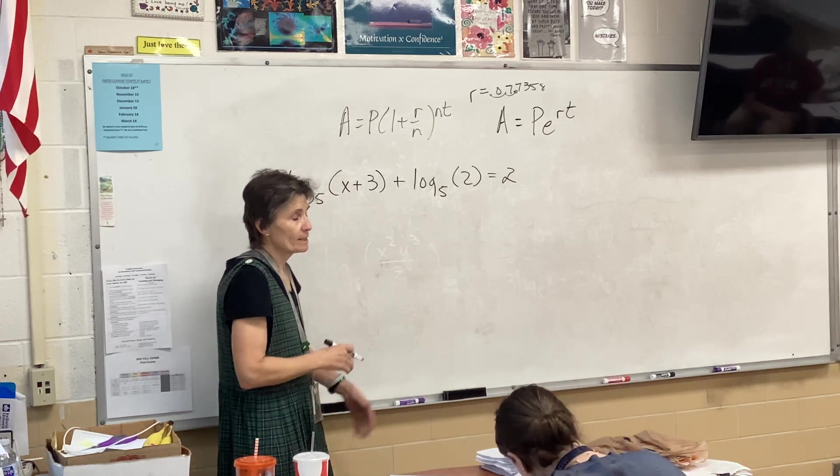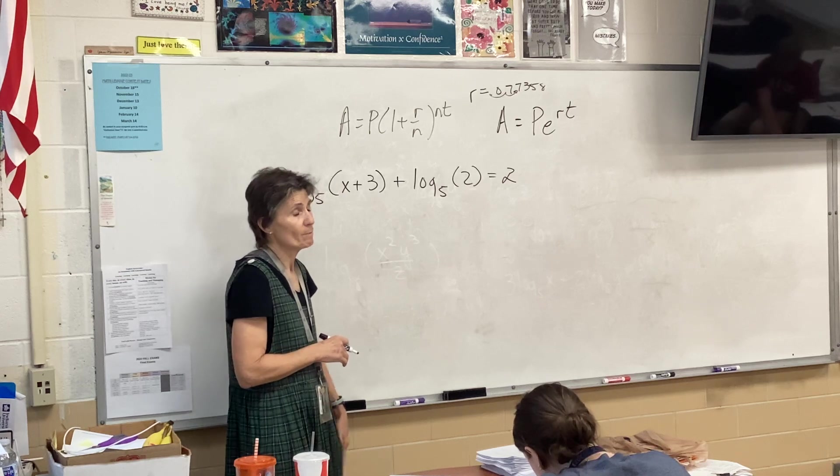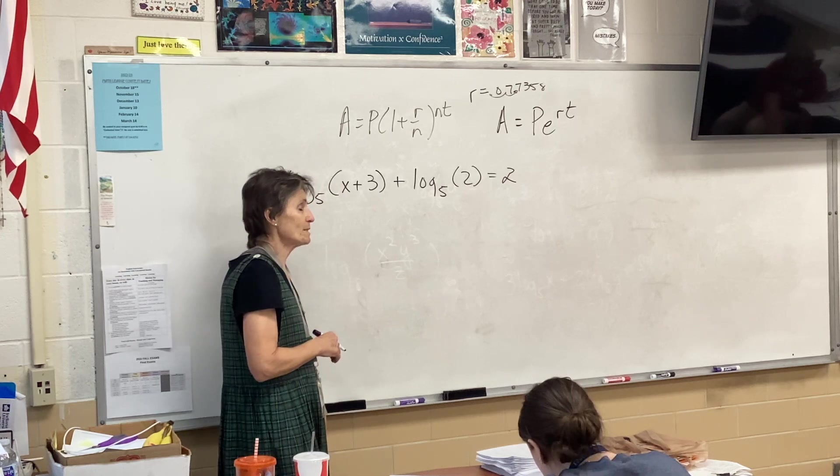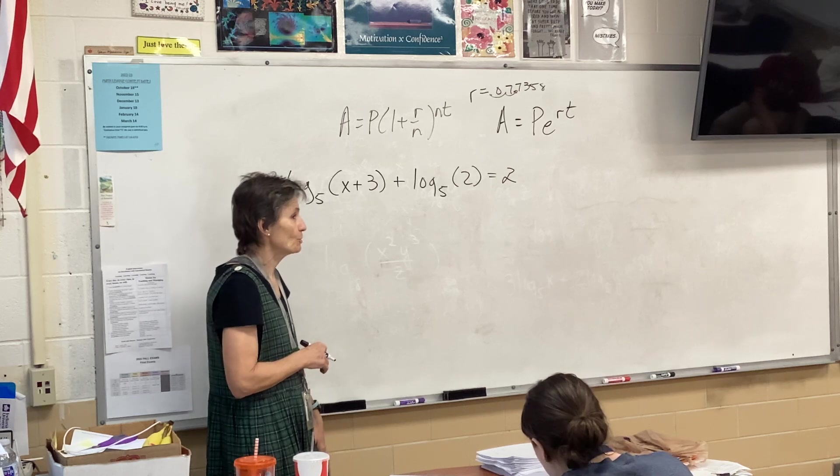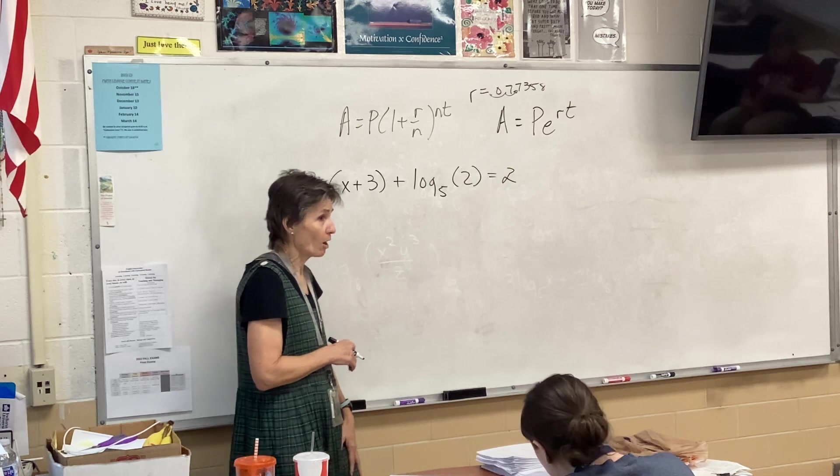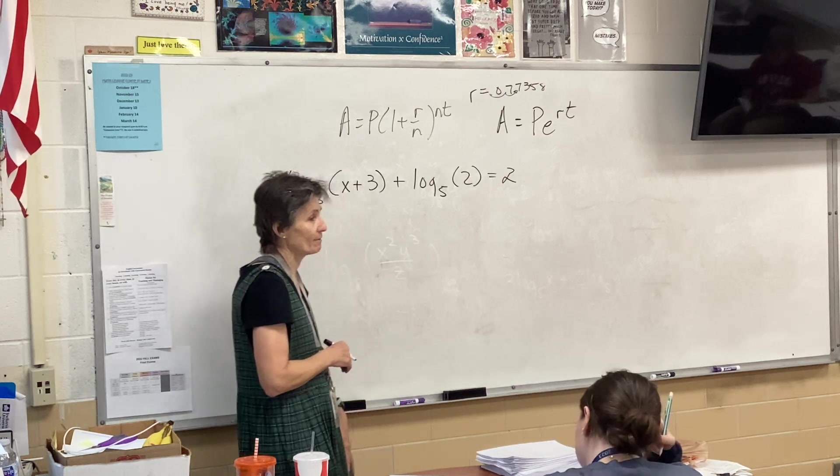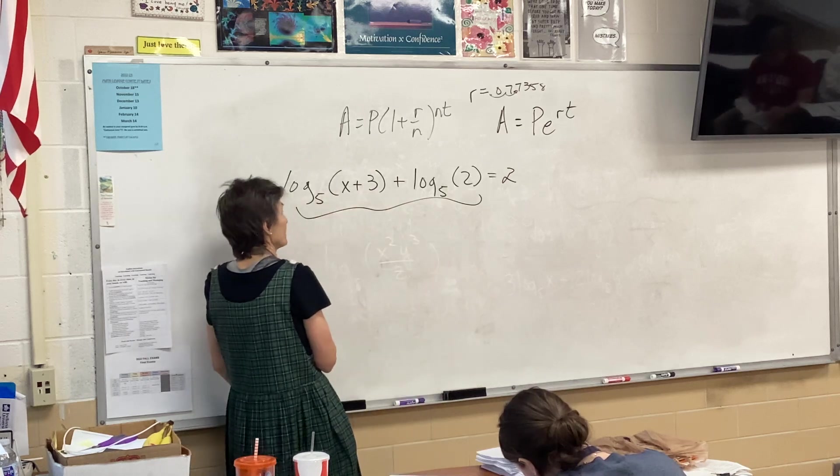This is no-calculator. Don't need a calculator for this. We do need to do something, though, before we can solve it. What's wrong with this equation? There's two logs on the same side. You can have two logs, but not on the same side of the equation. So we're going to put these together. How are we going to put them together?